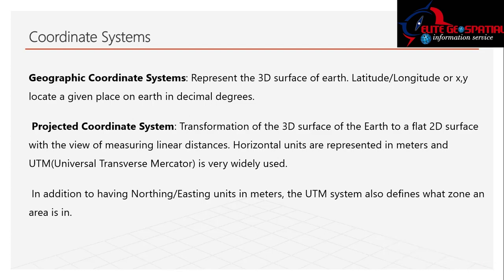We have the Projected Coordinate System and the Geographic Coordinate System. The Geographic Coordinate System uses longitude, latitude, and decimal degrees. The Projected Coordinate System sections the earth into zones — for instance, in Nigeria we have Zone 31, Zone 32, and Zone 33. It is the transformation of the 3D surface of the earth to a flat 2D surface for measuring linear distances, with horizontal units in meters.